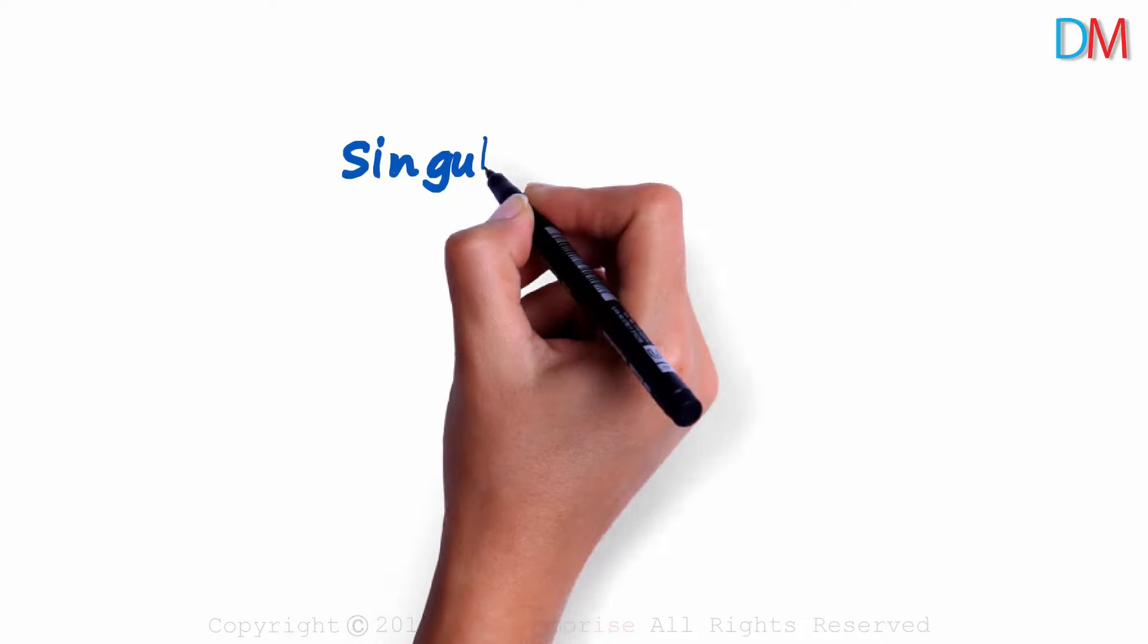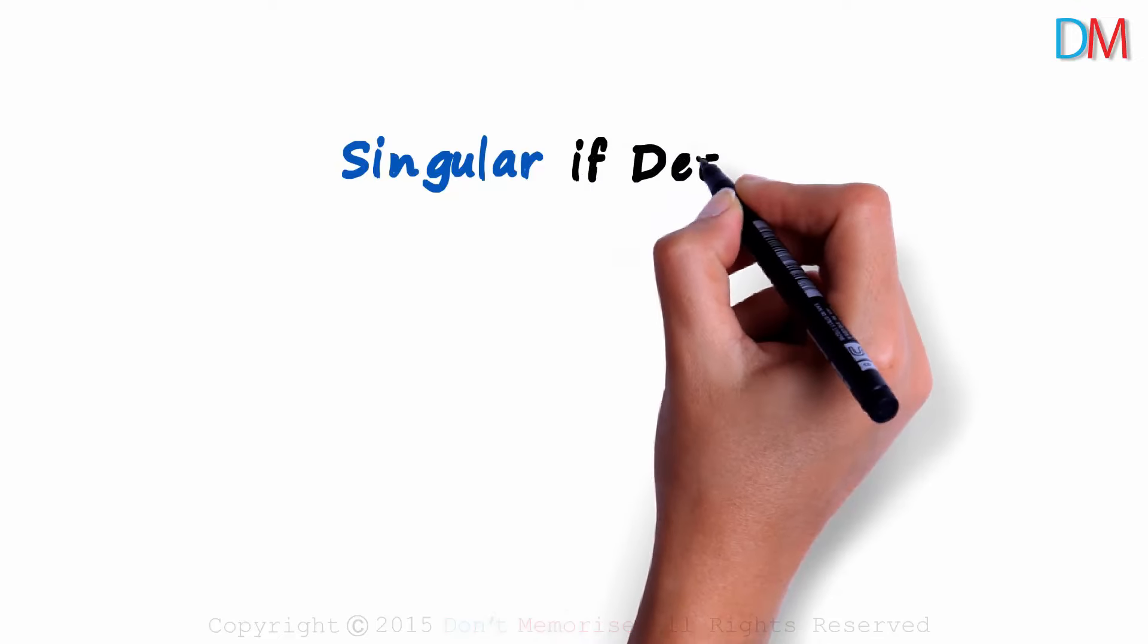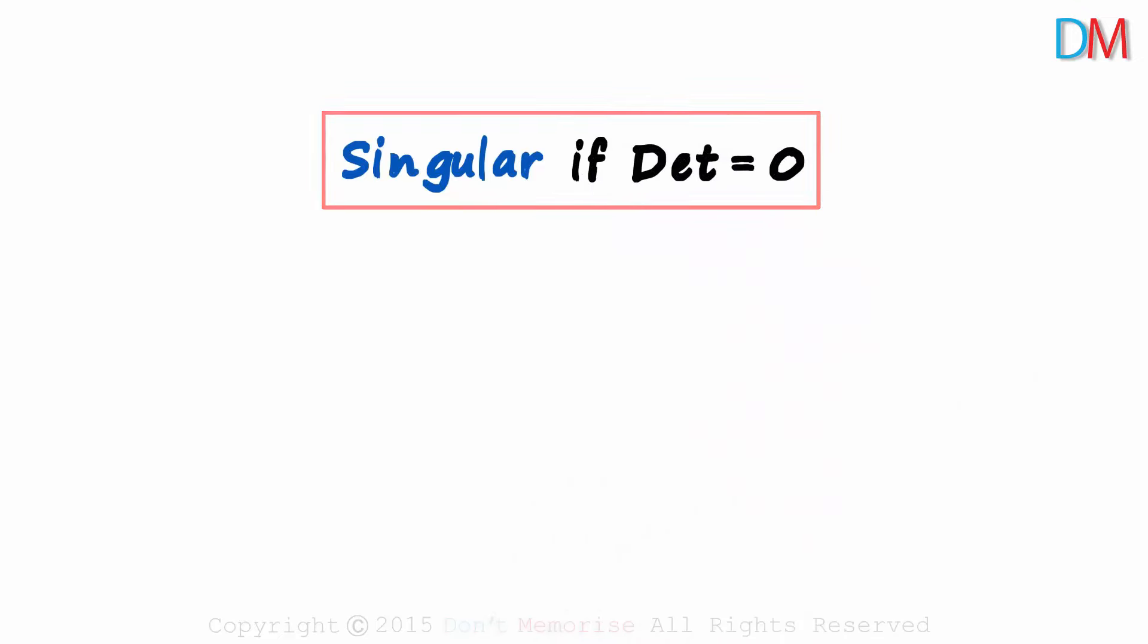When can a matrix be called singular? The definition is very simple. It's singular if its determinant equals zero. That's how simple the definition is.